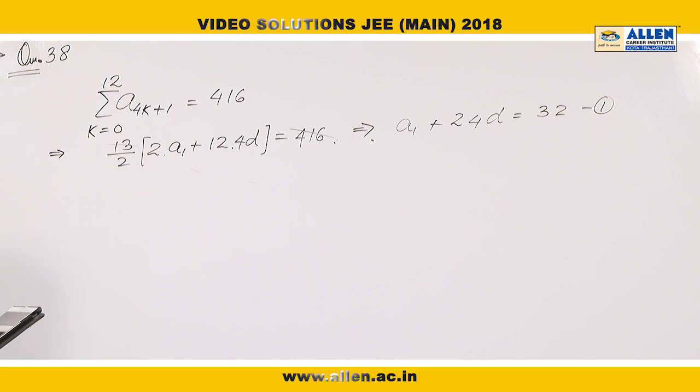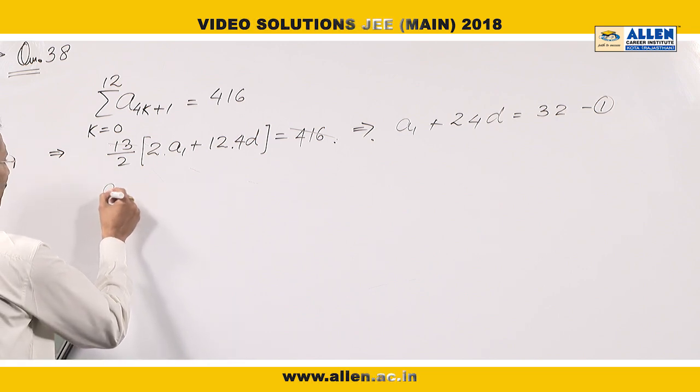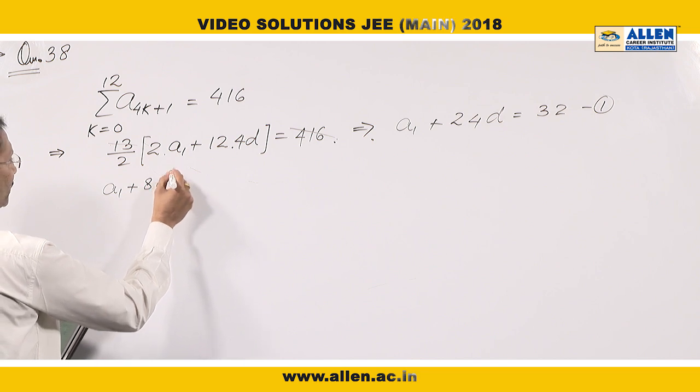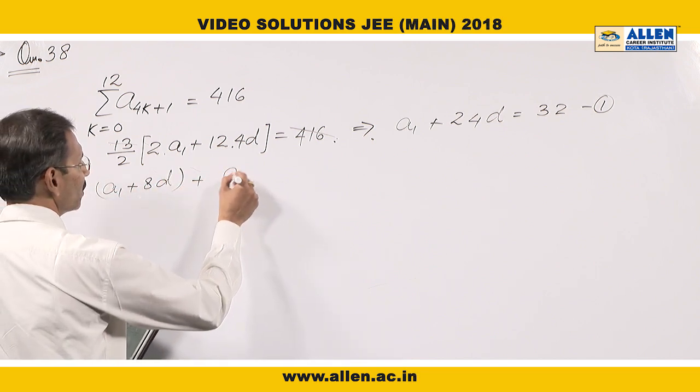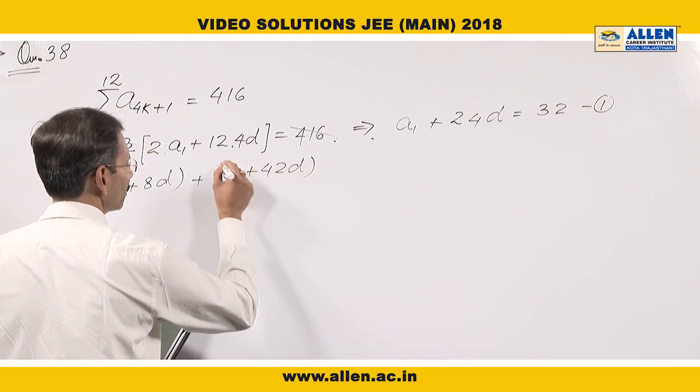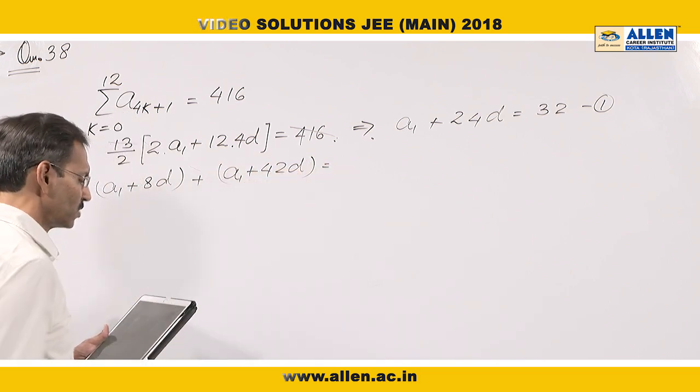One more relation, a₉ + a₄₃ is given. a₉ is a₁ + 8d and a₄₃ is a₁ + 42d equals 66.